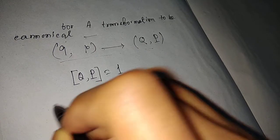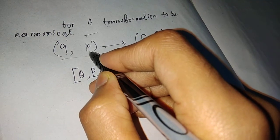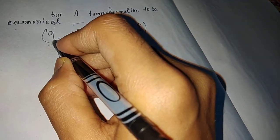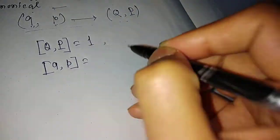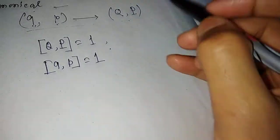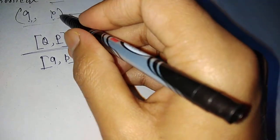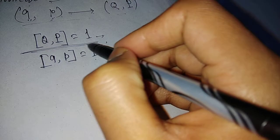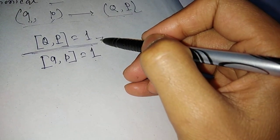For these two coordinates to be canonical — if Q is the canonical coordinate and P is the canonical momenta — then the Poisson bracket of Q and P must equal 1. If this condition is satisfied and your old coordinates were canonical, then you can say your new coordinates are also canonical.